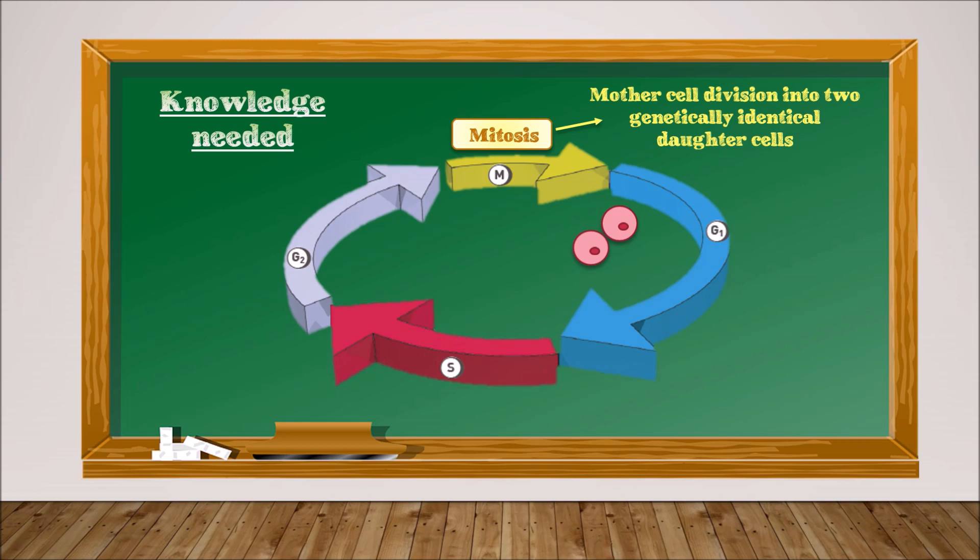the mother cell must first double its genetic material. This is called replication. Replication takes place during S phase.